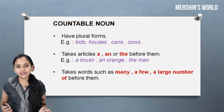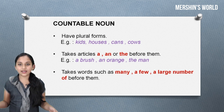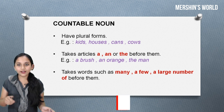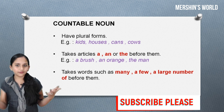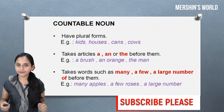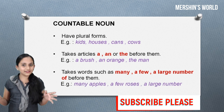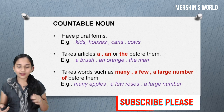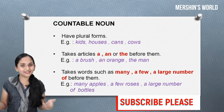Next, countable nouns take words such as 'many', 'a few', and 'a large number of' before them. Examples: many apples, a few roses, a large number of bottles.